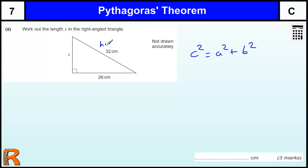So this is the hypotenuse. So 32 squared equals x squared plus 26 squared. It doesn't actually matter which of those is x, which of those is 26.